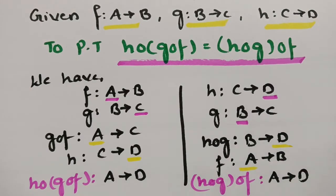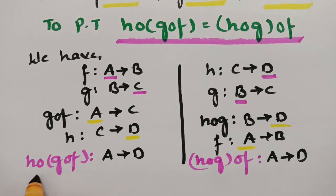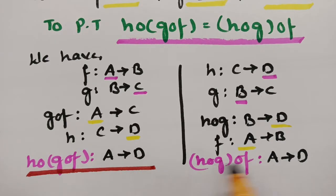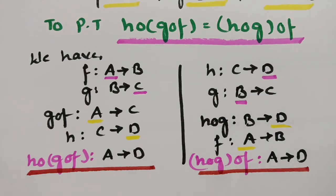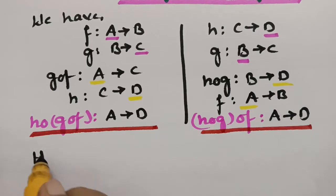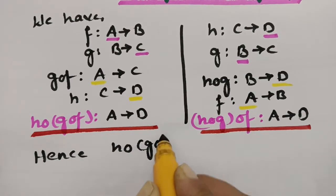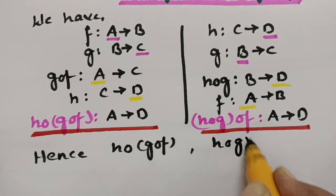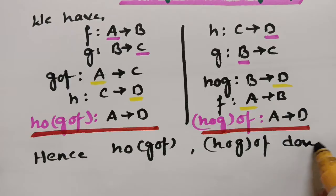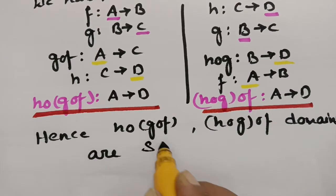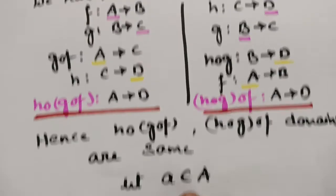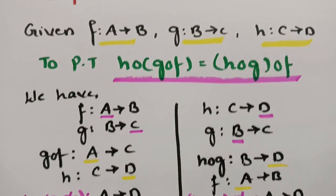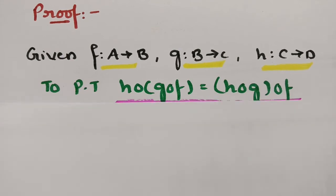If you observe, both the domains are the same. H∘(G∘F) maps from A to D, and (H∘G)∘F maps from A to D. Both mappings are the same, and therefore the domains are the same. The domain is A. Let small a belong to capital A. We have checked the domains of both functions and now we have to prove.